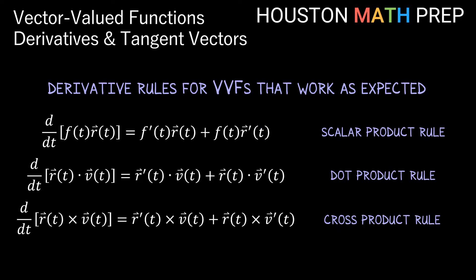We have three types of products with vector-valued functions, and those obey the same idea as the product rule from Calculus 1 — whether we're taking the derivative of a scalar product, a dot product, or a cross product. We differentiate one function, leave the other as is, and add both combinations together. It's important to get the correct type of object for your answer: the scalar product and cross product rules yield a vector answer, but the dot product rule yields a scalar function.